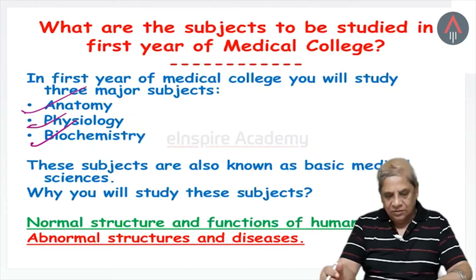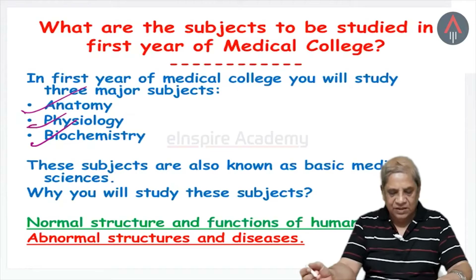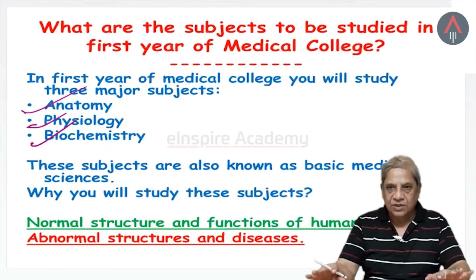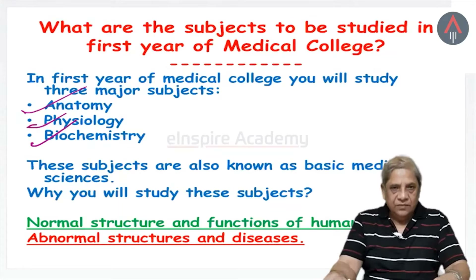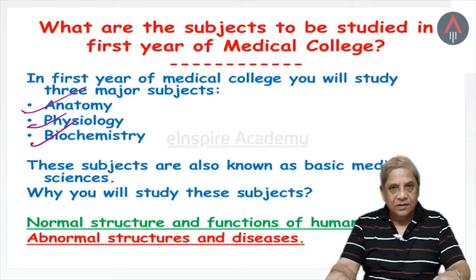So the first subject, anatomy, deals only with structure, while physiology and biochemistry deal with how our body functions. These three subjects which you will learn in the first year of the MBBS course — anatomy, physiology, and biochemistry — are also known as the basic medical sciences. The question will arise in your mind: why should we learn all these three subjects?